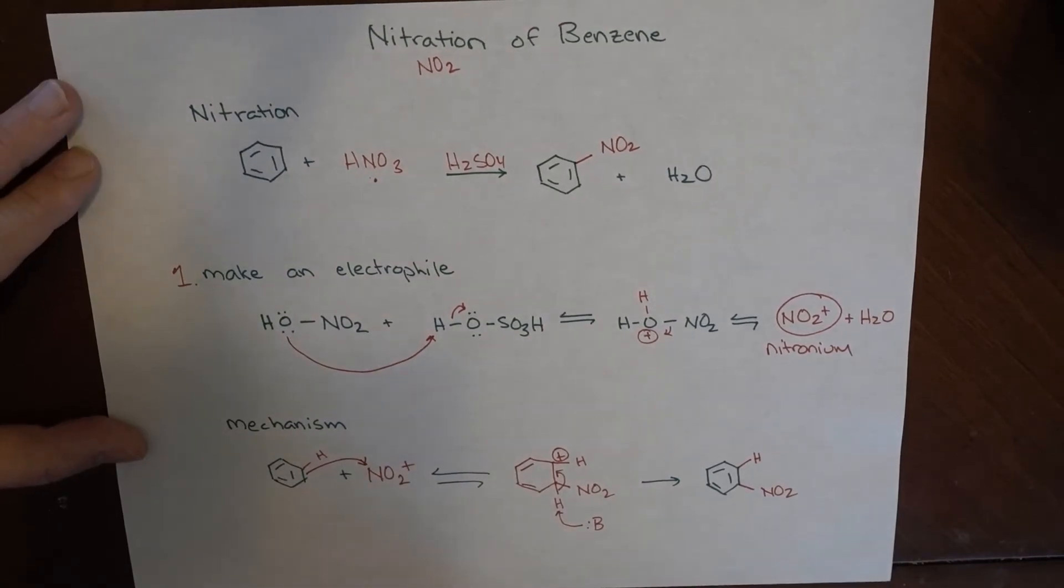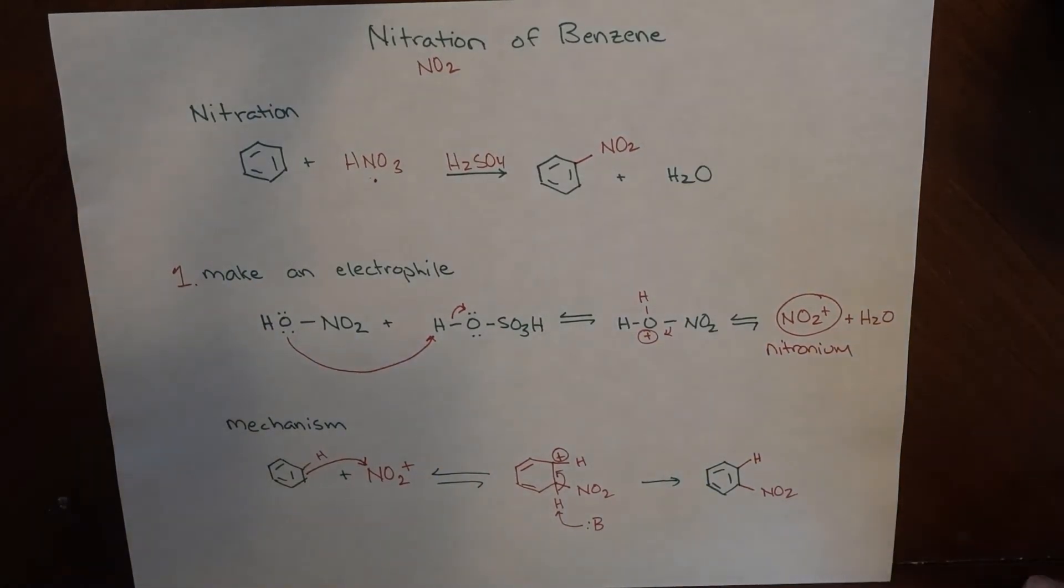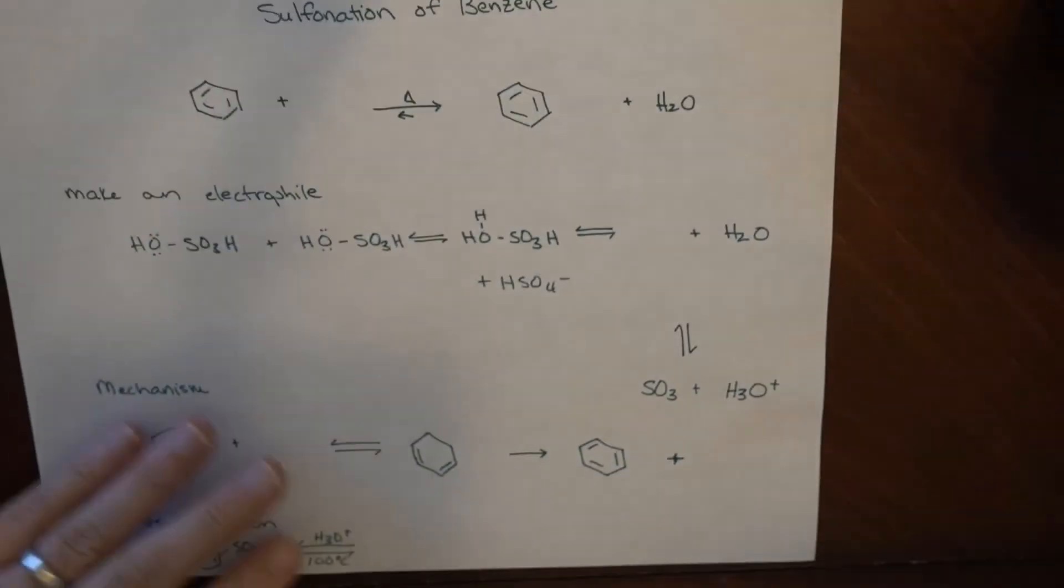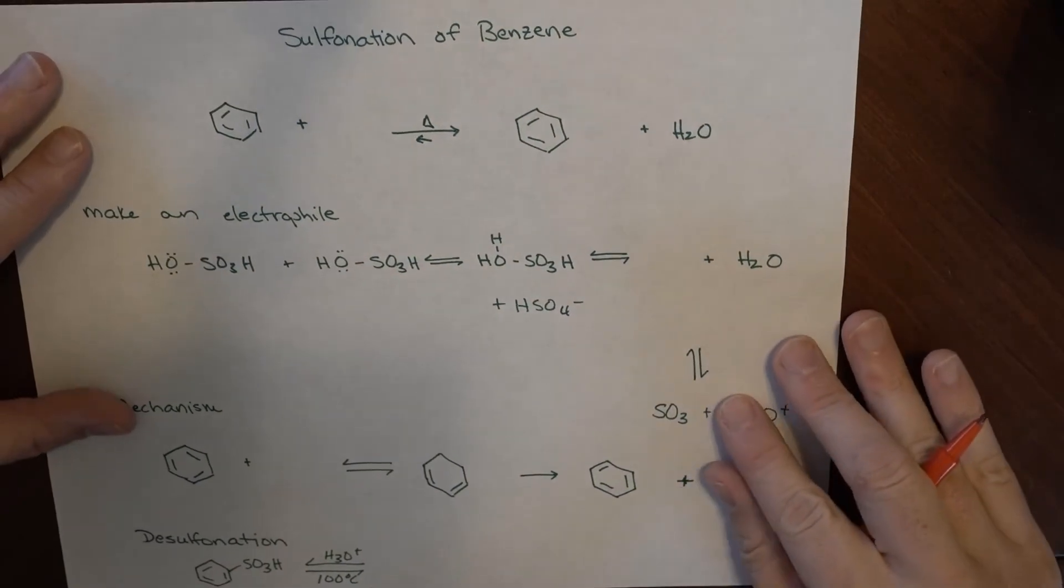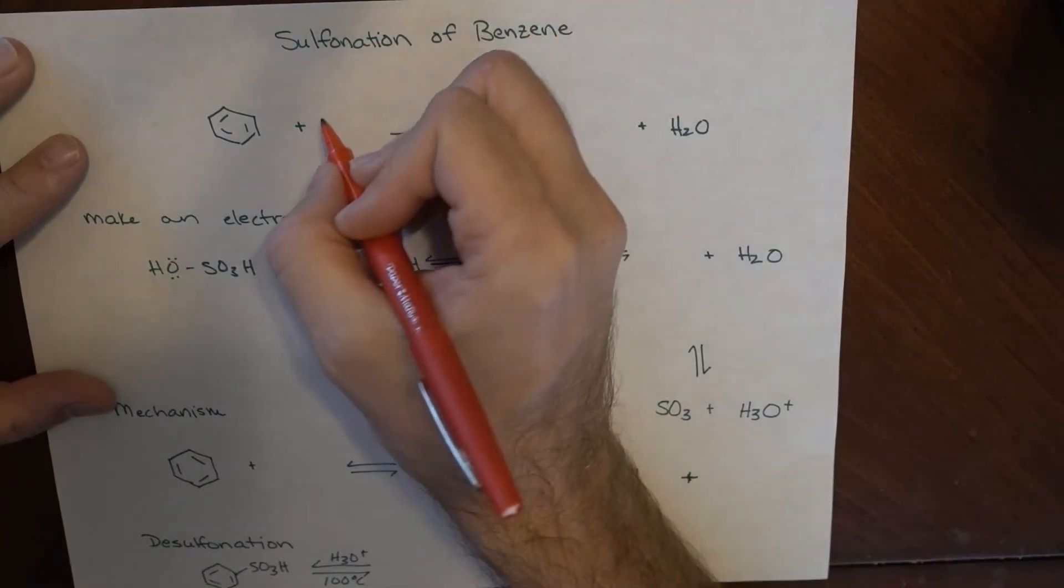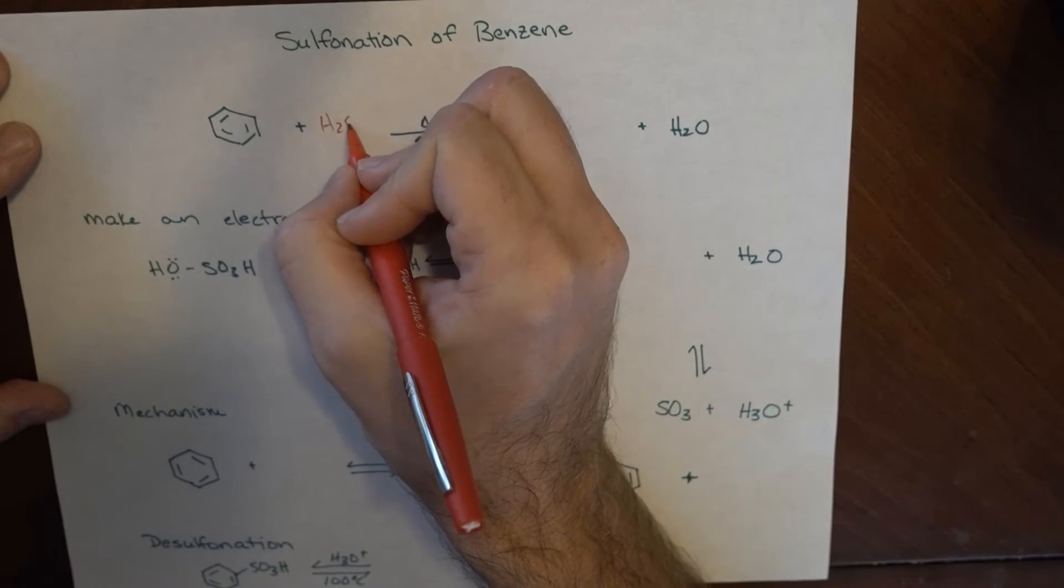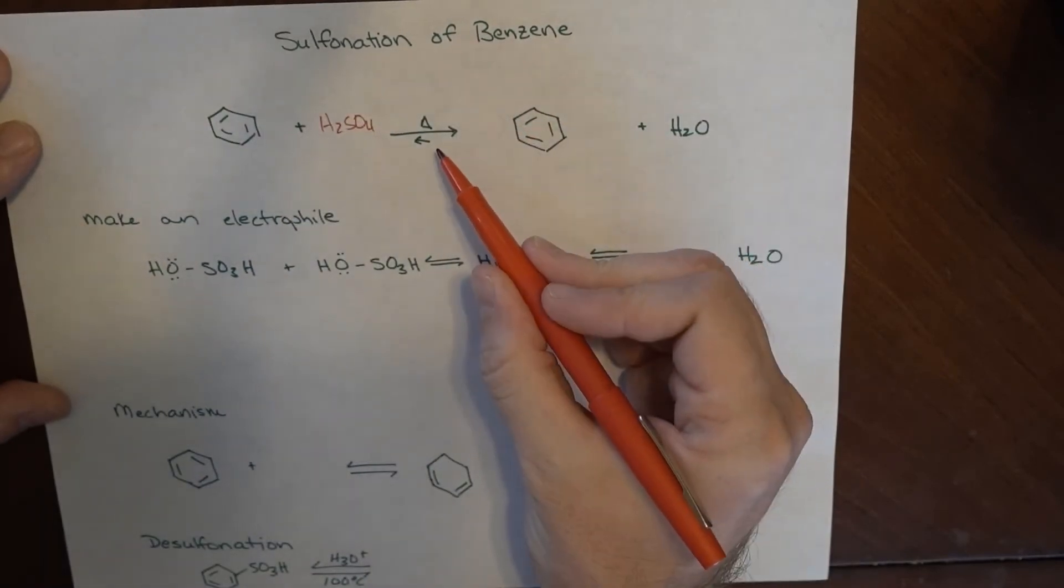That's our nitration of benzene—a fairly straightforward reaction. The other one that goes hand in hand with this is the sulfonation of benzene. It's a similar kind of reaction where when we have H2SO4 in the presence of heat, what we end up adding is SO3H, and water forms as a byproduct.